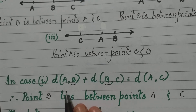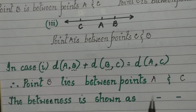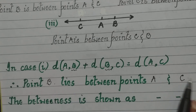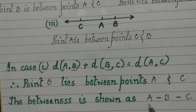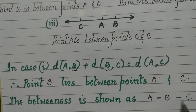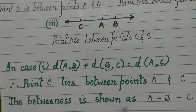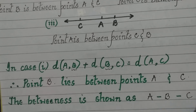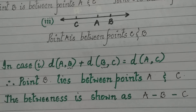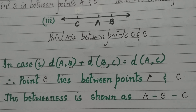Point B, which is repeated in both distances, lies between the other two points A and C. This betweenness is shown as A-B-C. When written or given as A-B-C, it means point B lies between point A and point C. This is what is called betweenness. Now let us go to the questions based on betweenness, which is question 3.